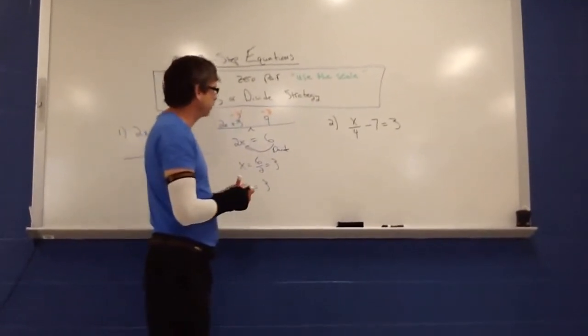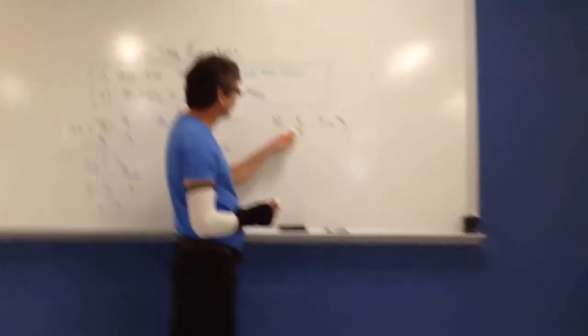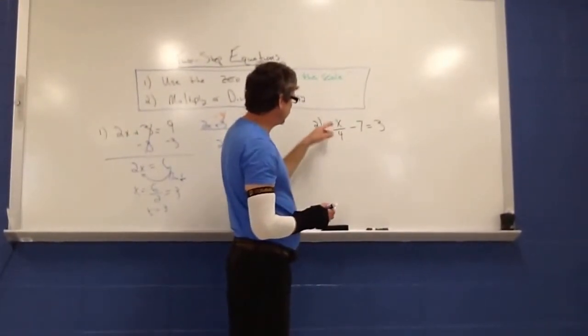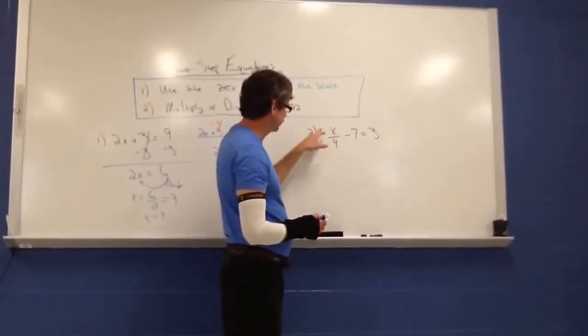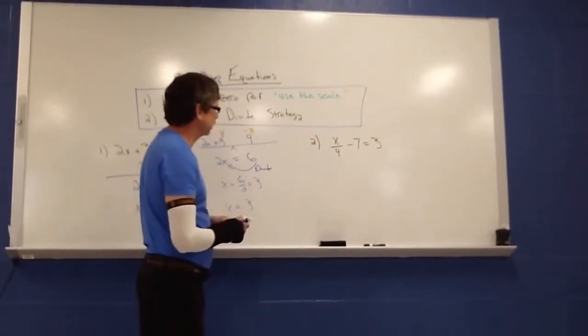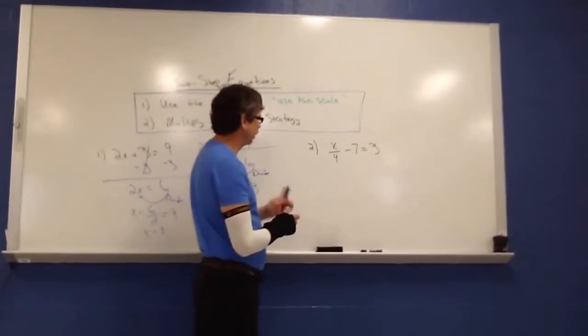Let's look at one more example. I have x over 4 or x divided by 4 and negative 7 is equal to 3. I can't really see the answer very clearly here. But if I kind of clean this up by using some equation thinking, I may be able to see the answer a little bit better.